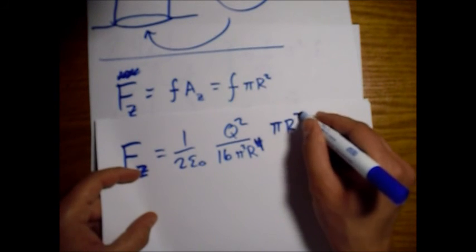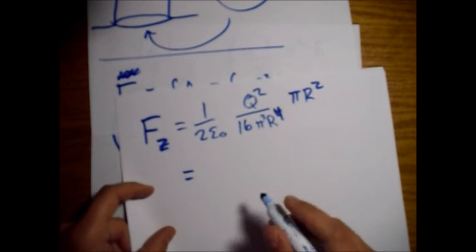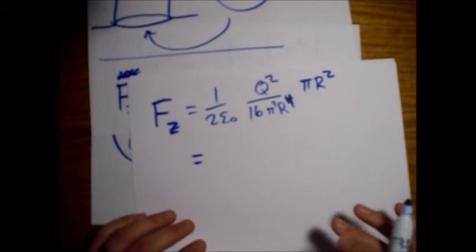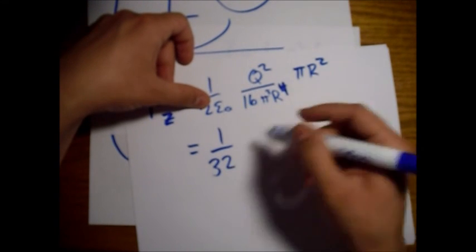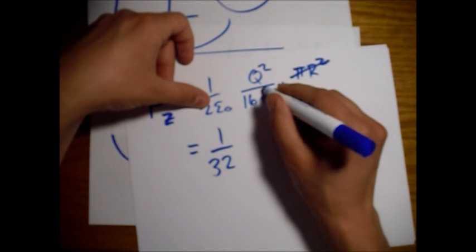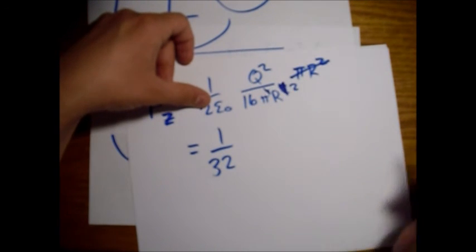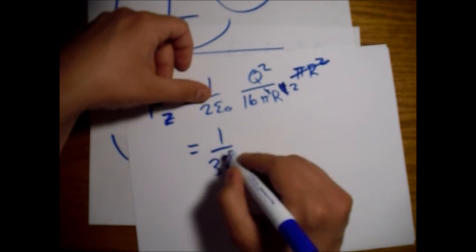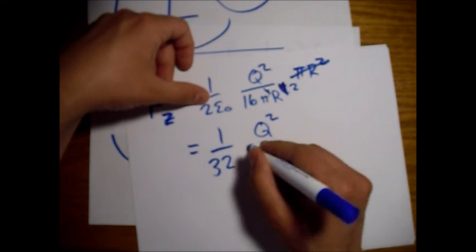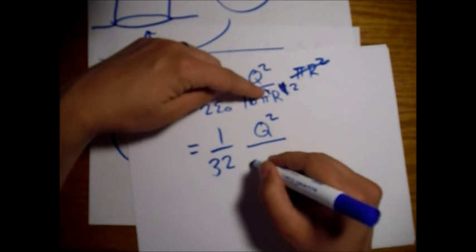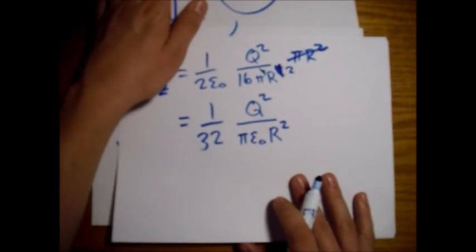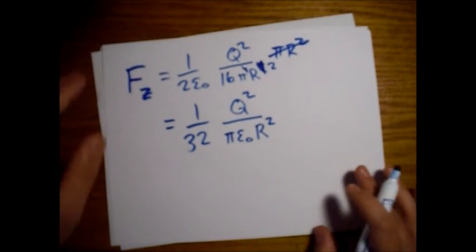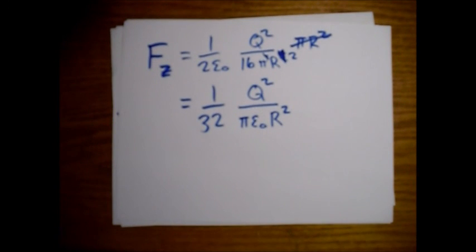Now we have a pi R squared here on top. So this force in the z direction, the force of repulsion between the northern hemisphere and the southern hemisphere, we get one over thirty-two. These will cancel out, and we'll go back to an R squared. One over thirty-two, we have Q squared, we have pi epsilon naught and an R squared left. So there we go. There's the force of repulsion between the northern hemisphere and the southern hemisphere from this electrostatic pressure.